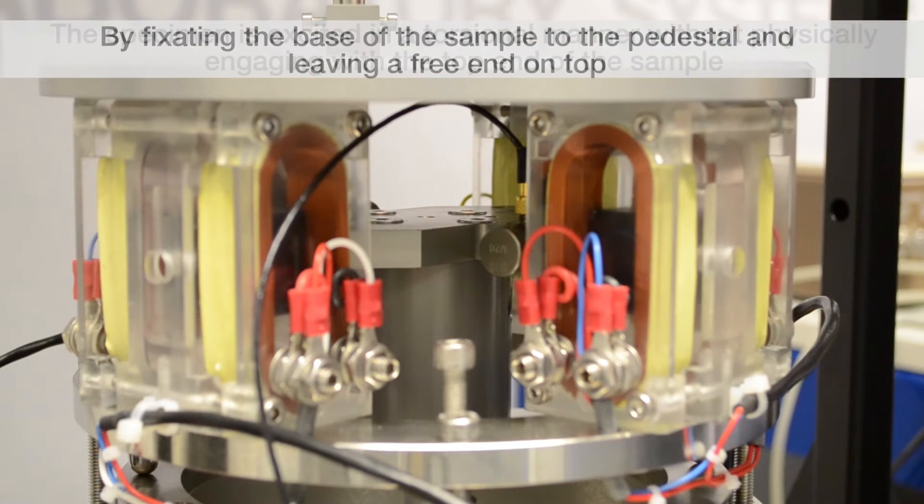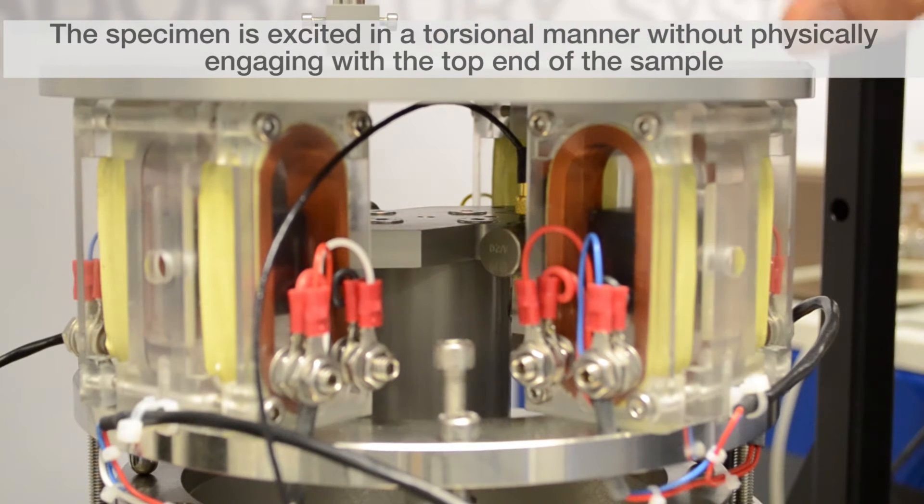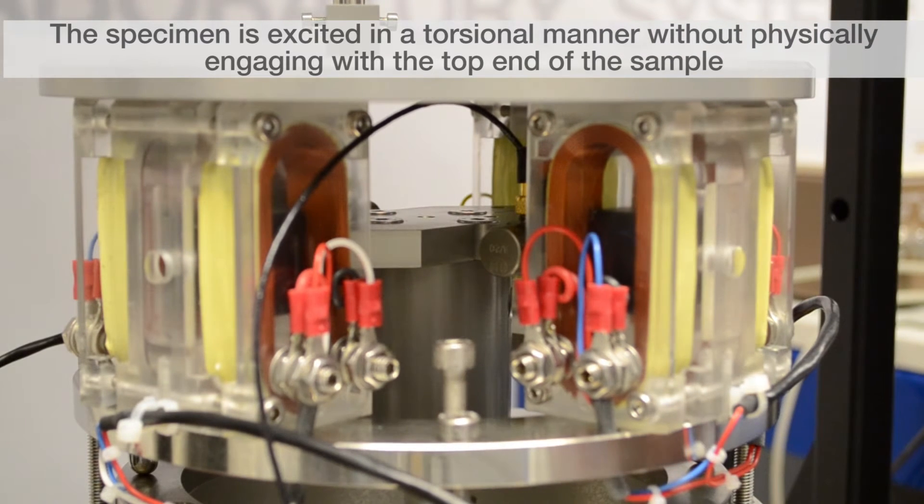Rather than applying a swinging motion, what we do here is we excite the specimen in a torsional manner. That means that we have to somehow come up with a way of rotating the top of the sample without actually touching it.